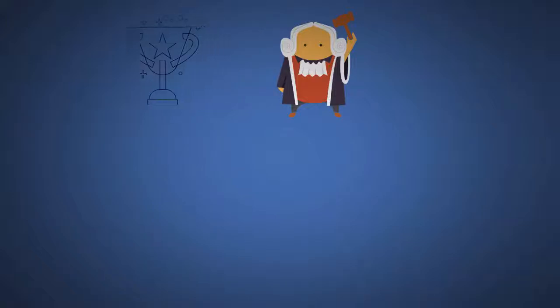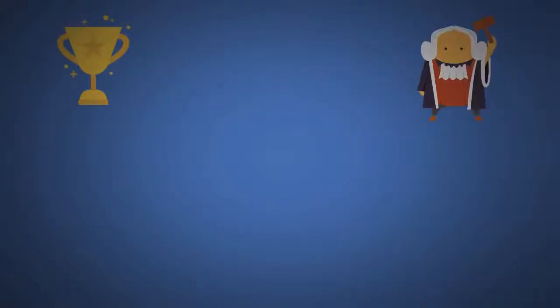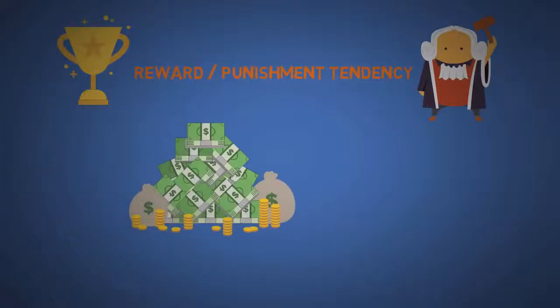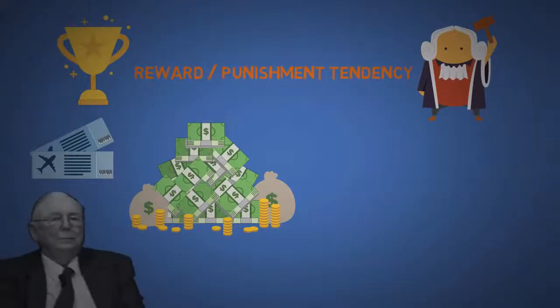Now I personally would separate these into different biases, but the first one is reward slash punishment tendency. If you want to persuade people, just offer them big rewards and incentives. Practically everyone has a price. This might seem obvious, but Charlie says every year he realizes how much he has underestimated the power of incentives. So this bias alone is worth spending hours talking about.